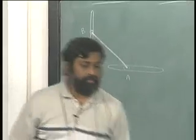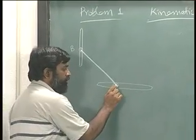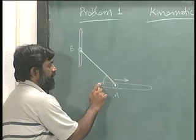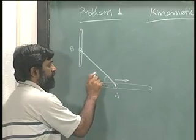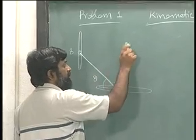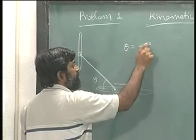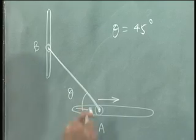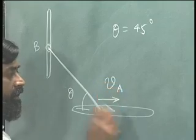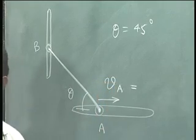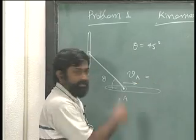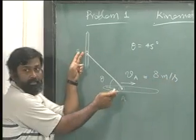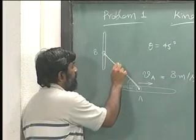Now what is asked is if I know the velocity of this, let's say this is at an angle theta. I think theta is given as 45 degrees. Let's say this is moving at a velocity VA. This is 8 meters per second. What is the length of this? This is 3 meter length.